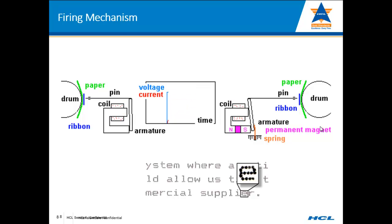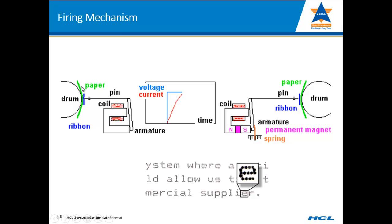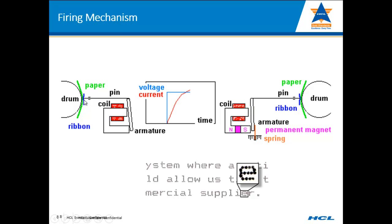As you can see in the slide, the characters at the bottom show how a character is formed — each character forms because of many dots. You can see the paper in green and the ribbon in blue. There is a drum, on top of which you place the paper, and there is ink present on the ribbon. There is a pin that fires through the ribbon, producing one dot on the paper. Many dots together form one character.